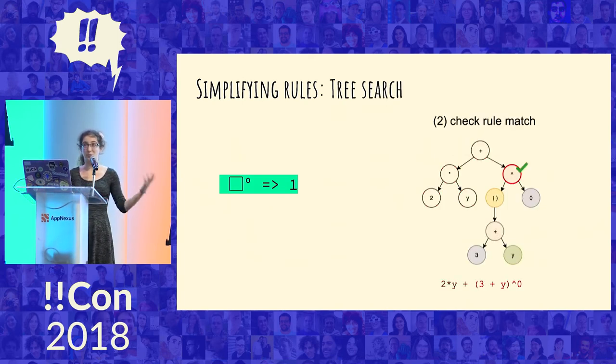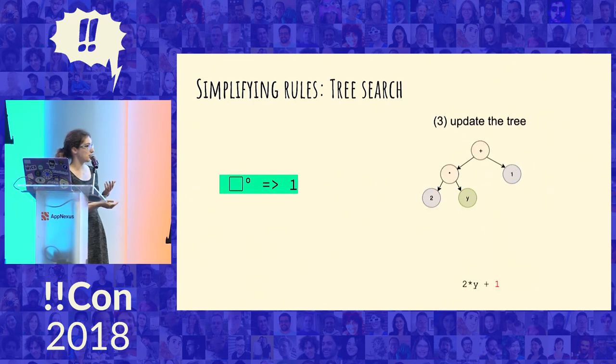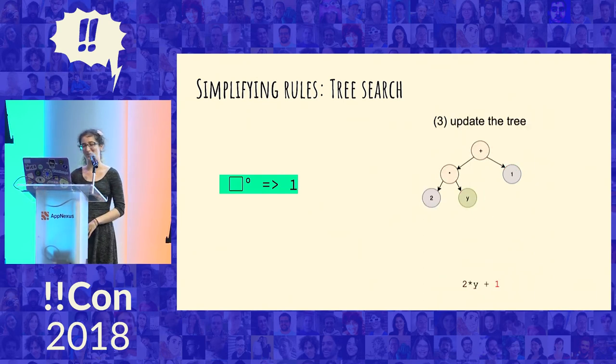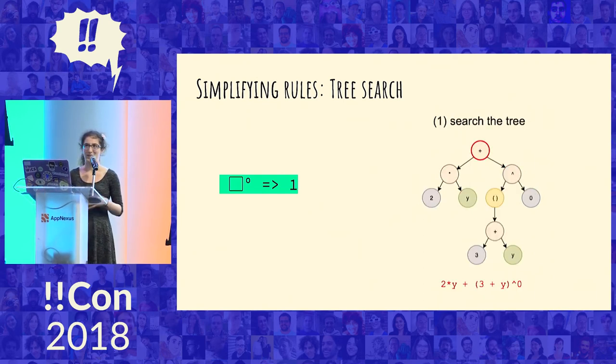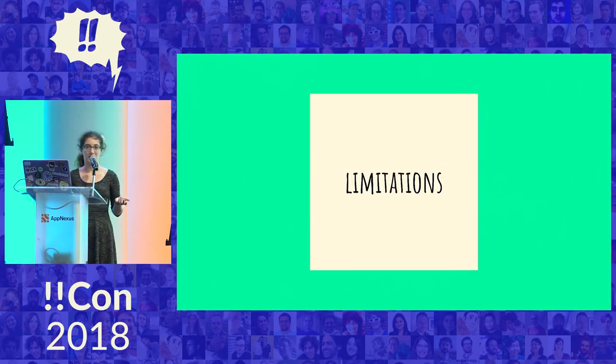And the way that these rules are applied is through tree search. So for example, with this rule, you would look at the tree, find an exponent node. Does it have zero as the exponent? If so, just replace that whole thing with one. And I know that zero to the zero is undefined, but that could be handled somewhere else with exceptions. And that's pretty much how all of the rules are applied in some order. Some things applied before others. But that's the algorithm.